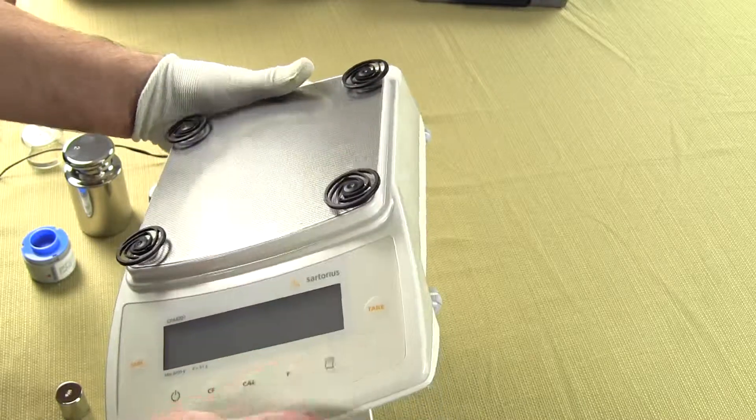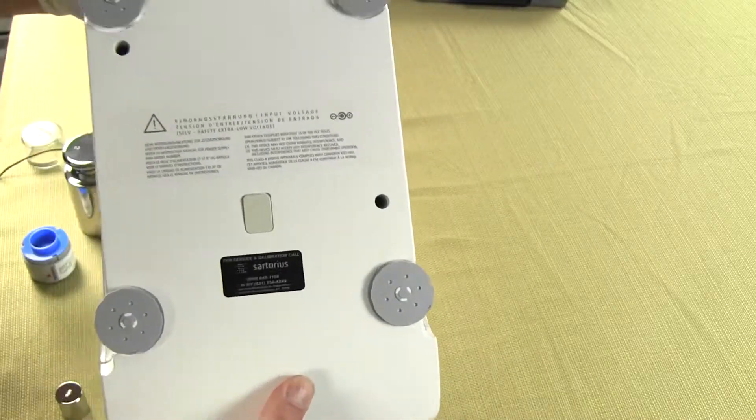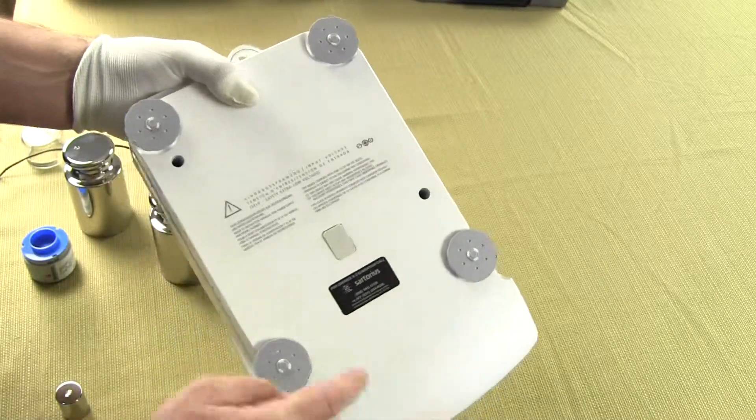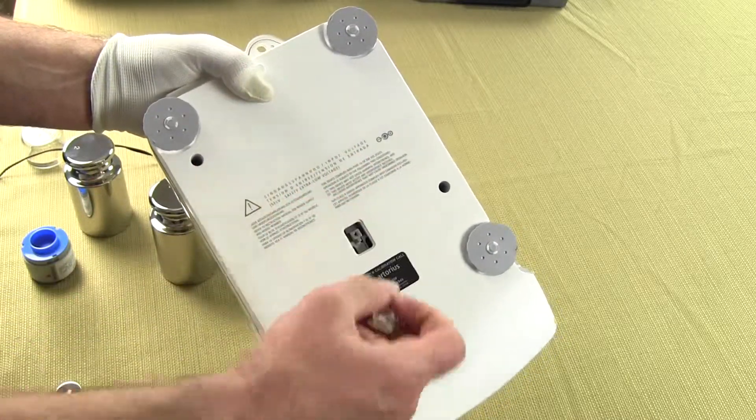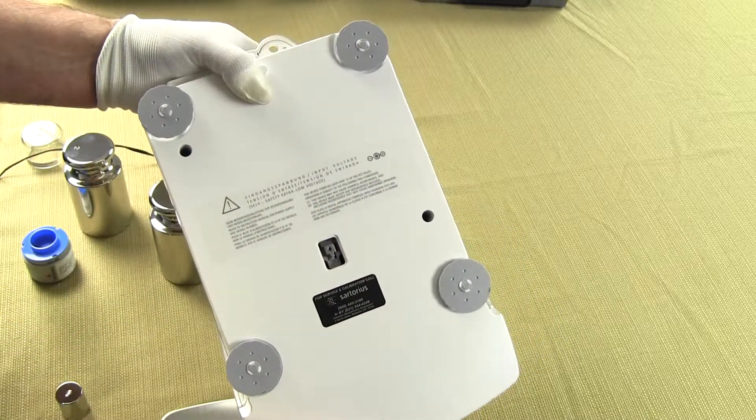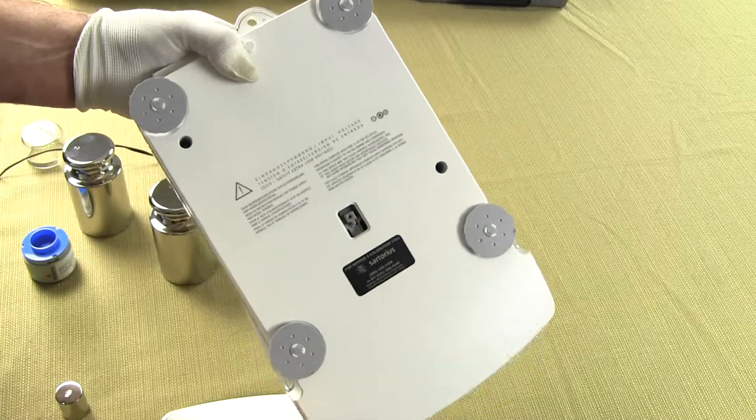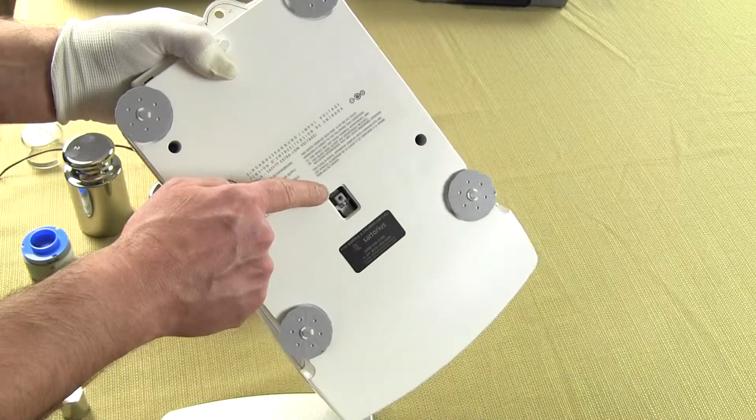Beneath the balance you have four adjustable feet. So on this tenth of a gram balance CPA series you have four adjustable feet. Now here this is the way below hook.